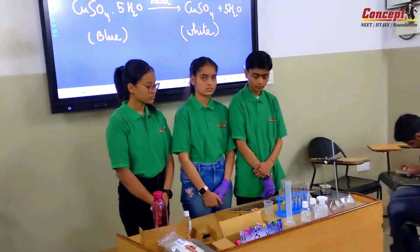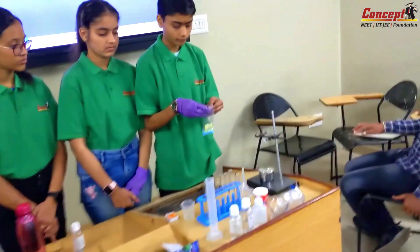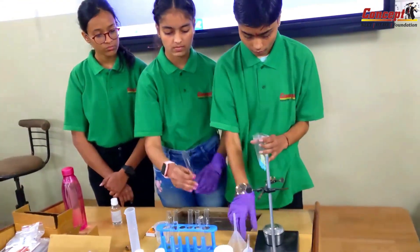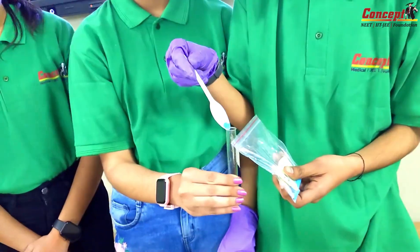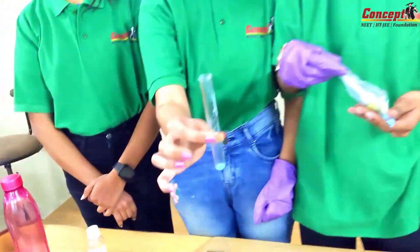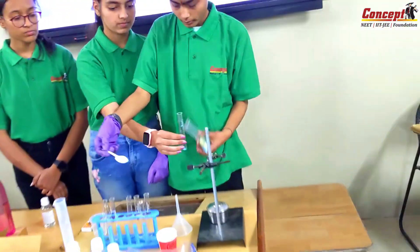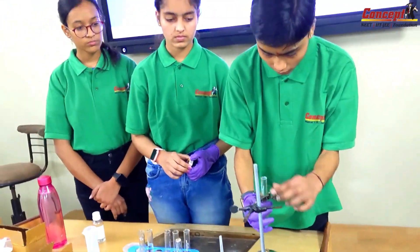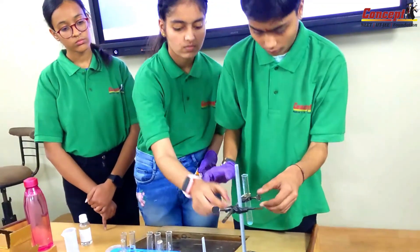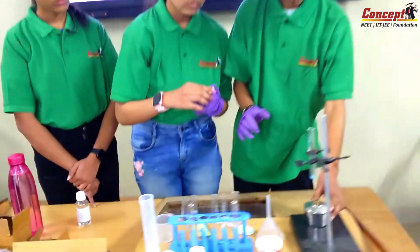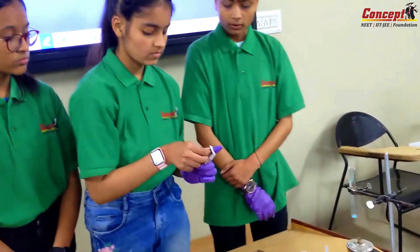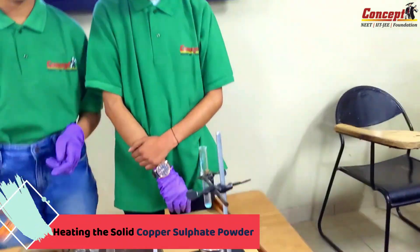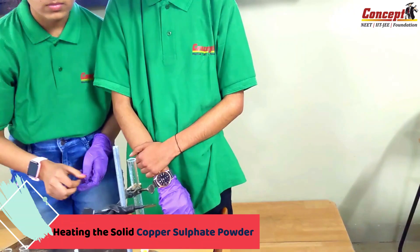Take some copper sulfate, hold the test tube, and clamp it in the retort stand. Now let's try to heat it up. Take the lighter, light the burner, and put the test tube a little below.